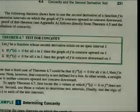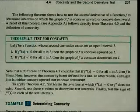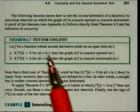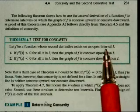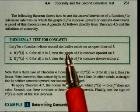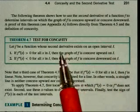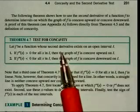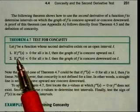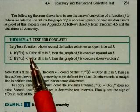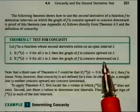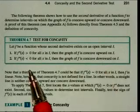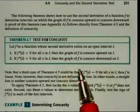Theorem 4.7 gives us the test for concavity. Let f be a function whose second derivative exists on some open interval i. We're going to have to find second derivatives. If the second derivative is positive — greater than zero — then the graph is concave up on that interval. If the second derivative is negative, the graph is concave down on that interval.